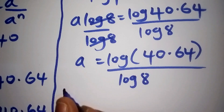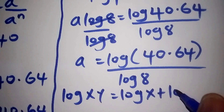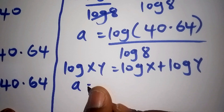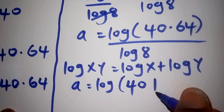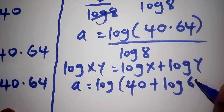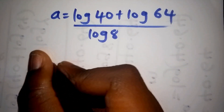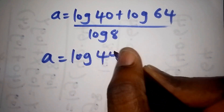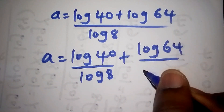Now, assuming that we have the log of xy, this can also be written as log of x plus log of y. So A equals the log of 40 plus the log of 64, all over log of 8. We can also split this as log 40 over log 8, plus log 64 over log 8.